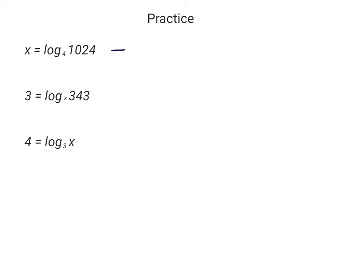Okay, so this one gives us 4 to the power of X equals 1024. So how many times do we multiply 4 by itself to get 1024? Well you can just do it repeatedly on the calculator, and you end up with X equals 5.